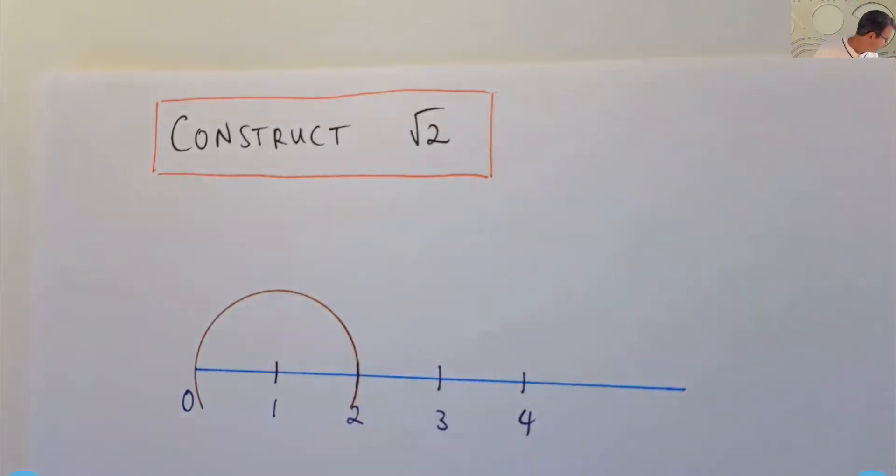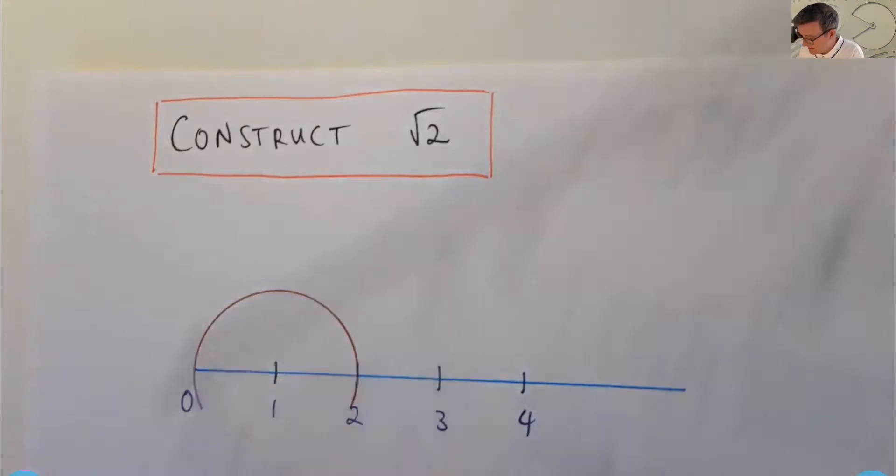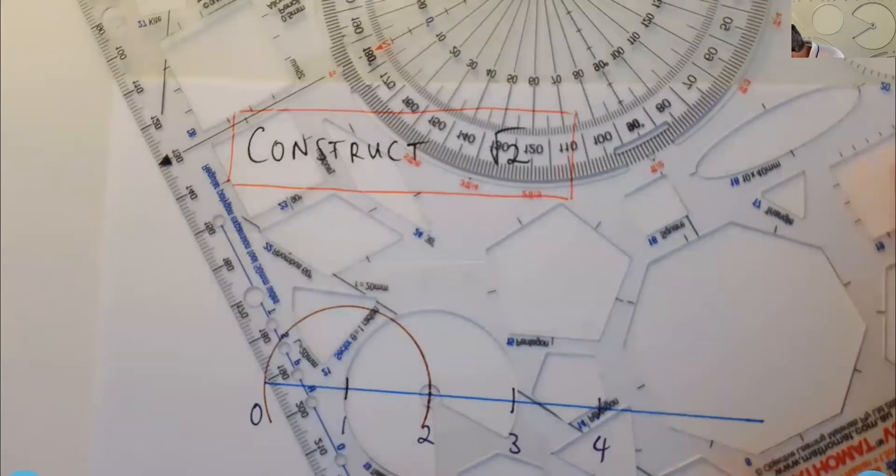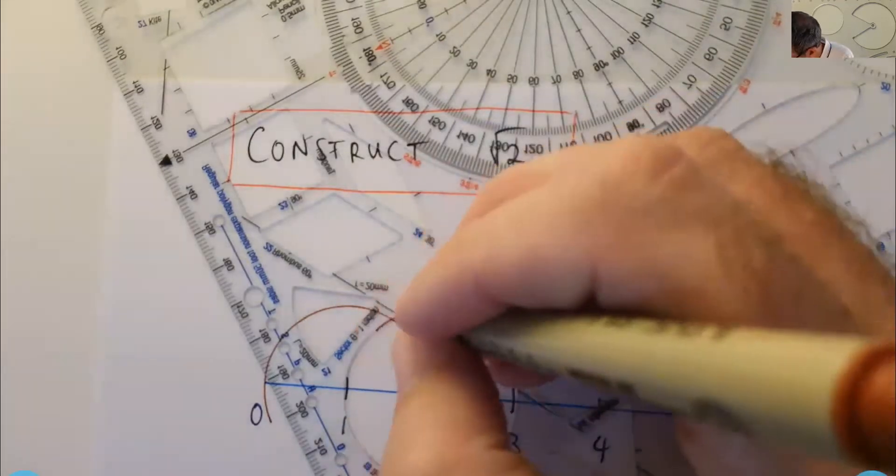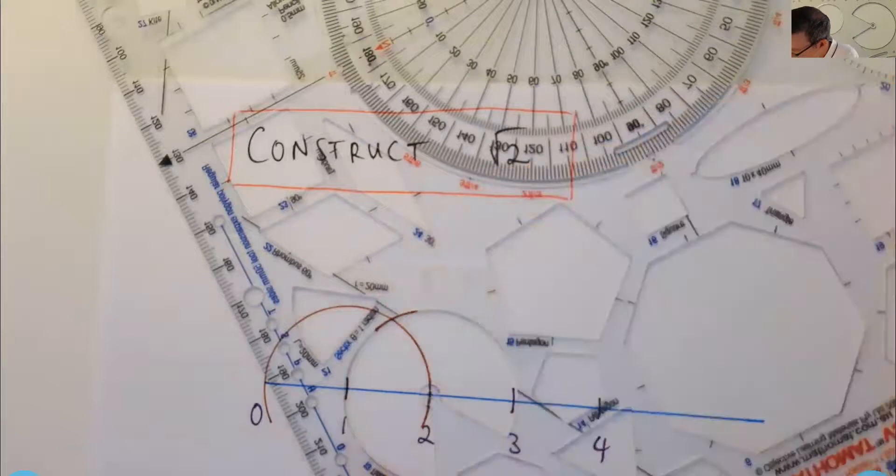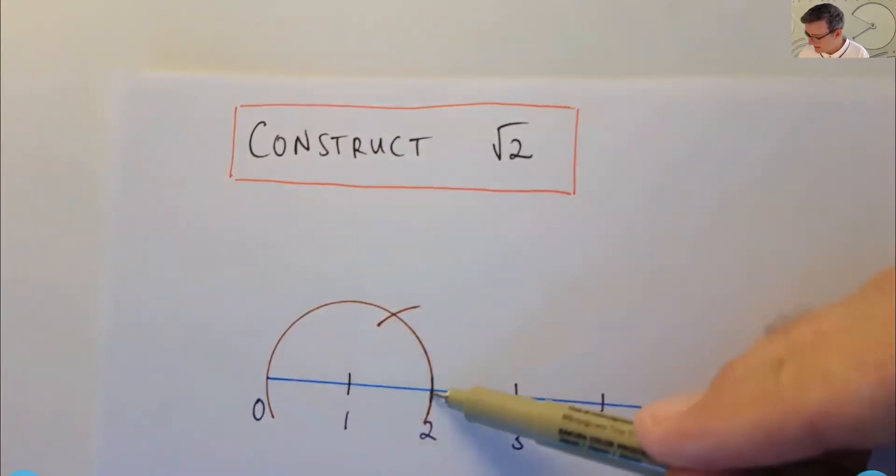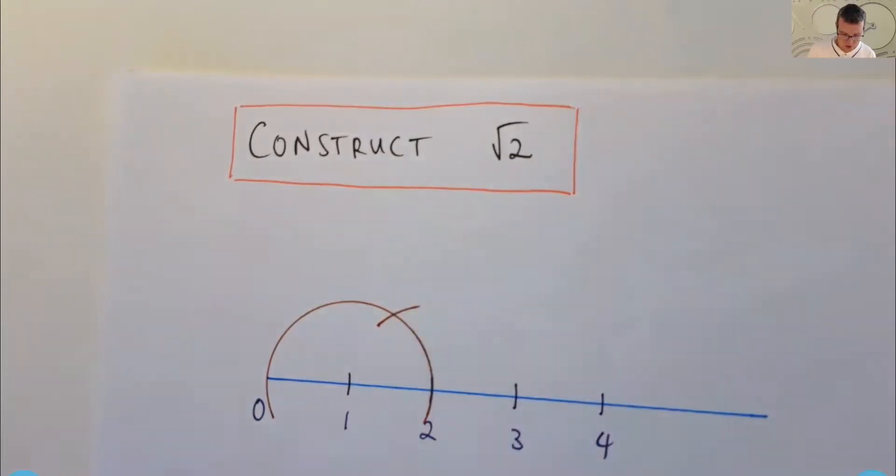And then what I'm going to do is essentially bisect the interval 1 to 2. So I can do that by placing my circle arc template center at 2 and just drawing a little arc there. So essentially what I've done there is I've constructed an equilateral triangle. And so I've got a point here, a point of intersection here, two points. I can do a line.